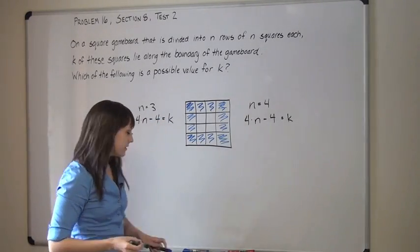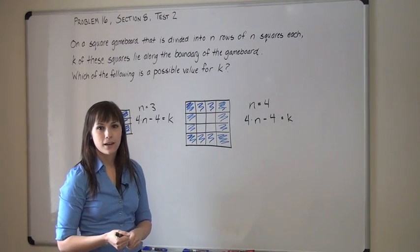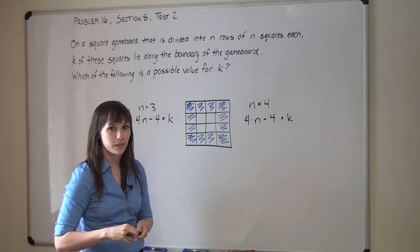So in every instance, no matter what n is, the expression 4n minus 4 is going to give you k. So now we have some good information about k.